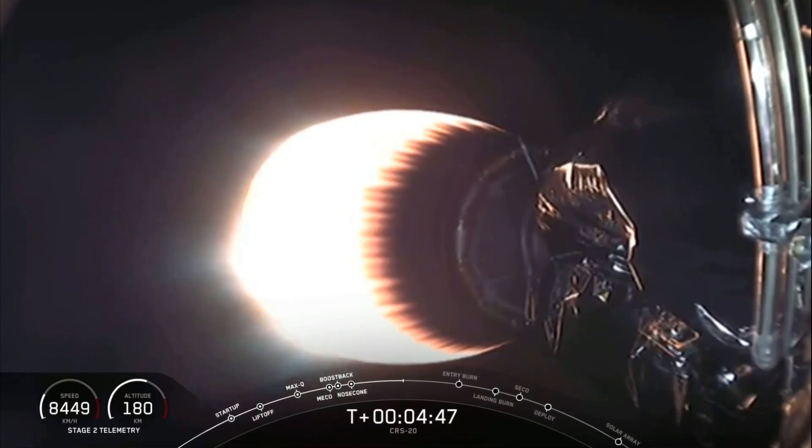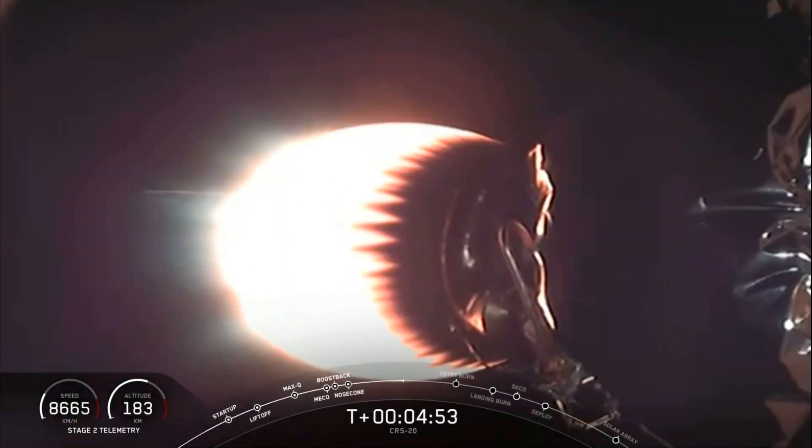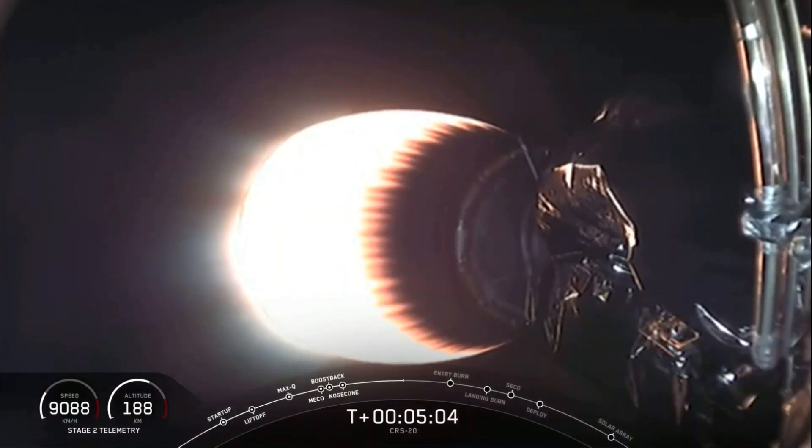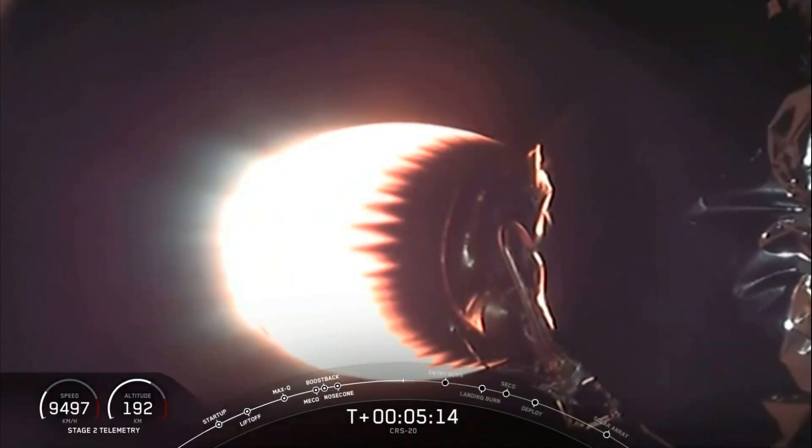So then following the boostback burn, Falcon 9 executes its re-entry burn to slow itself down before hitting the dense part of the atmosphere. And then the last of the three burns is the landing burn, which begins just before touchdown, and that's to slow the vehicle down rapidly right before landing. So far, second stage is still looking good.